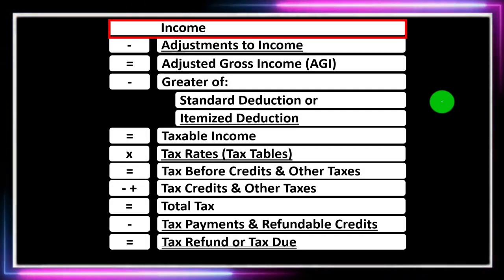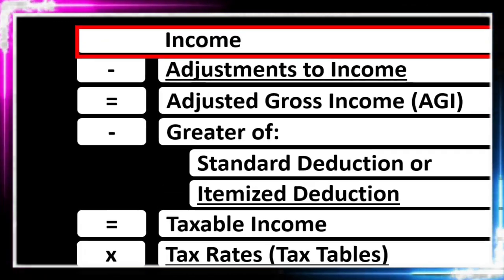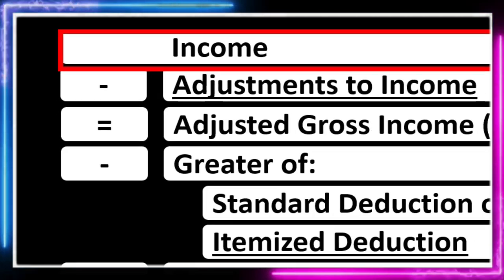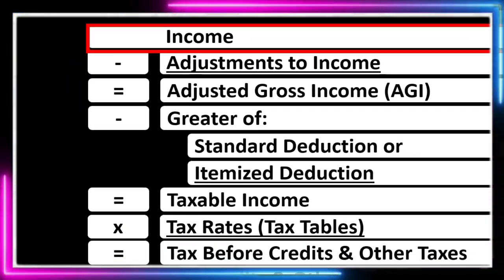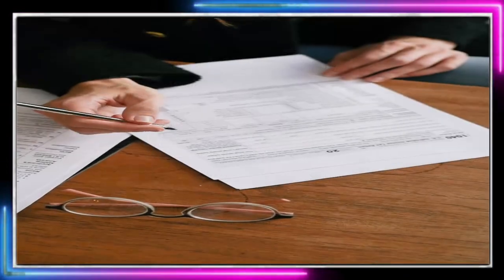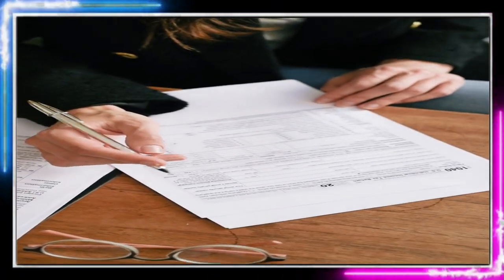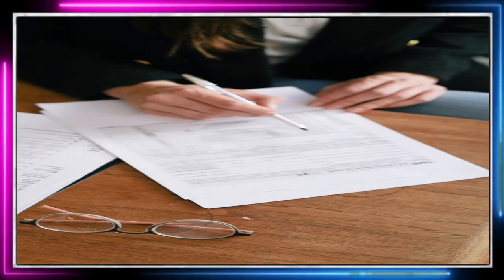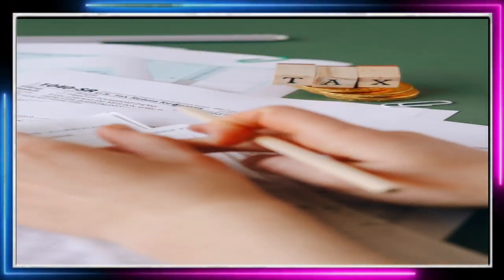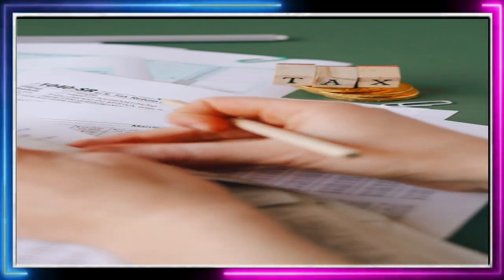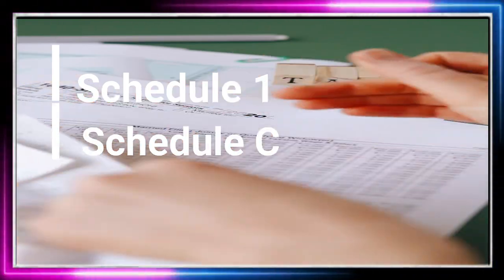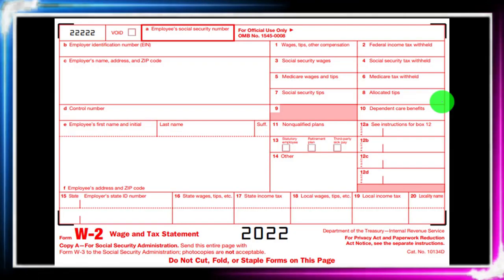Within the income tax formula, we're at the top on the first line — the income line — which can look deceptively simple because it's just that one line, but there's a lot of things included in it. Think of it like the summary sheet of an Excel worksheet, with other sheets feeding into it — the 1040 being a summary sheet, with other schedules like Schedule 1, Schedule C, Schedule D feeding into the income line.